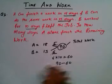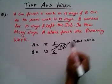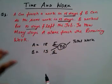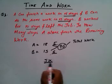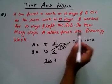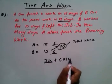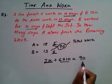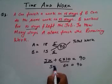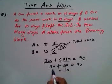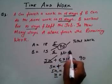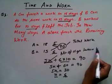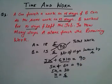Here is another approach using the LCM method. Suppose A takes X days to finish the remaining work. A's one day work is 5, so work done by A is 5X. B worked for 10 days with a one day work of 6, so B's work is 60. Total work is 90, so 5X plus 60 equals 90, giving 5X equals 30, and therefore X equals 6. So the number of days taken by A to finish the remaining work is 6 days. Friends, please try and use this method in your exams. Thank you for watching.